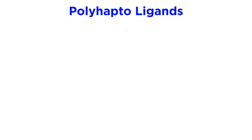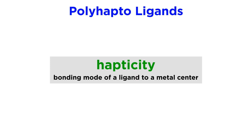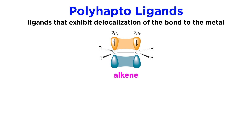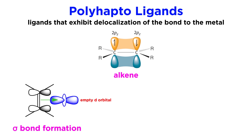Next we are going to introduce a very interesting concept: that of the polyhaptoligand, where hapticity is a word that describes the bonding mode of a ligand to a metal center. With these polyhaptoligands, we will see a delocalization of the bond between the ligand and the metal. Take for example this generalized alkene. This can behave as a ligand donating p pi electron density from its HOMO to the metal atom.